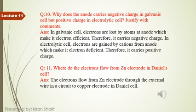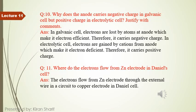In the electrolytic cell, the anode is connected to the positive terminal of the battery, giving it a positive charge. Question number 11: where do electrons flow from the zinc electrode in the Daniel cell? The Daniel cell is an example of a galvanic cell. Electrons flow from the zinc electrode through the external wire.